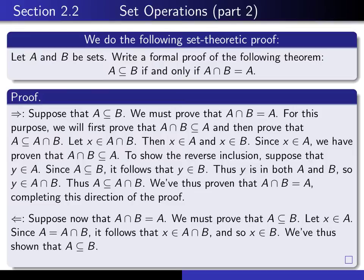In this direction, I'm assuming A is a subset of B and I want to deduce that A intersect B is equal to A. I start by saying: suppose that A is a subset of B. We must prove that A intersect B is equal to A. Since that's an equality of two sets, we need to prove two things: that A intersect B is a subset of A, and that A is a subset of A intersected with B.